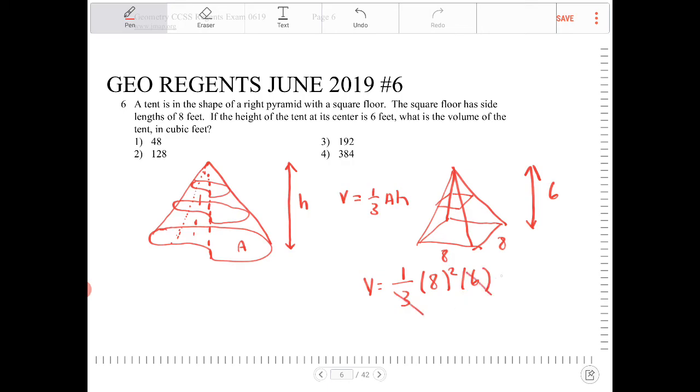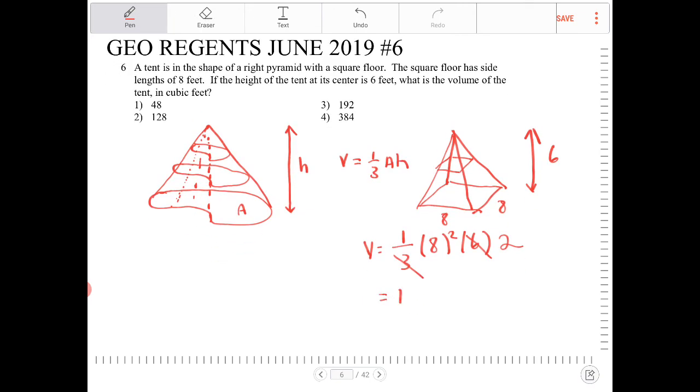The 3 and a 6 reduces to become a 2. 8 squared is 64. So this is 128. So that would be option 2.